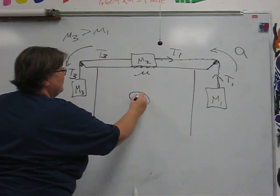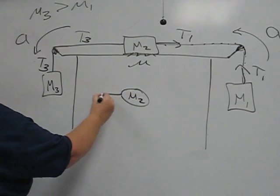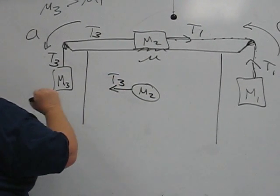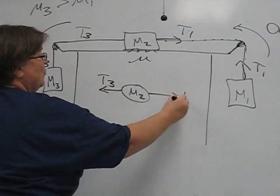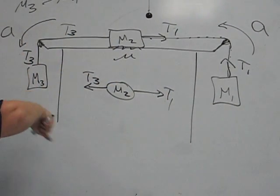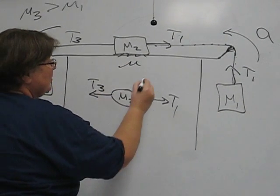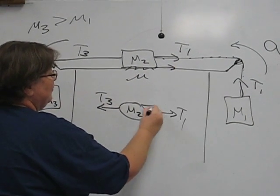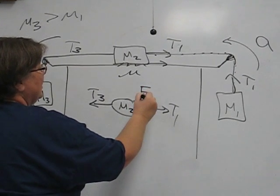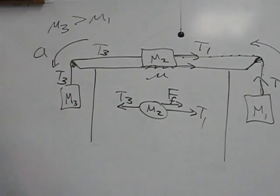For the case of M2, tension three is pulling this way, tension one is pulling that way. If there's motion counter-clockwise, then the friction, the frictional force acts in the direction of T1.